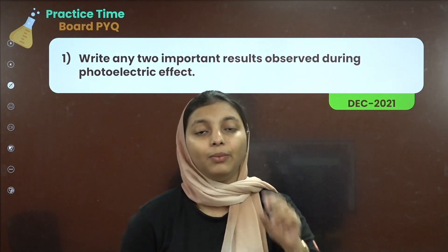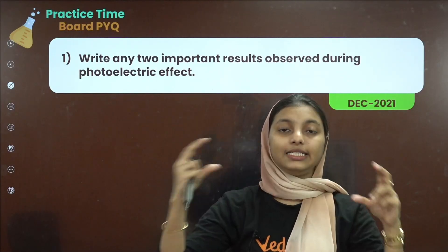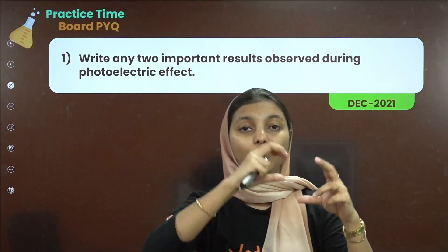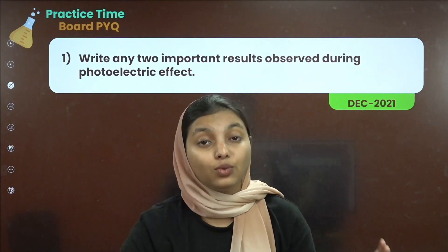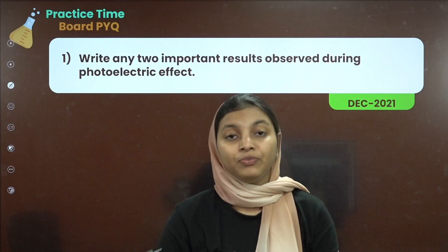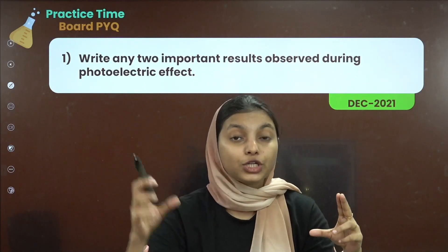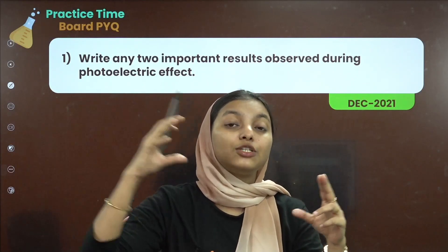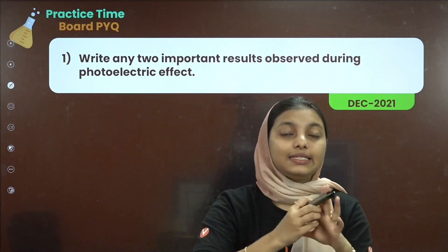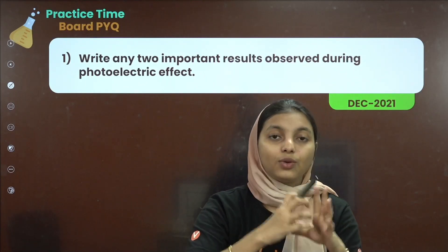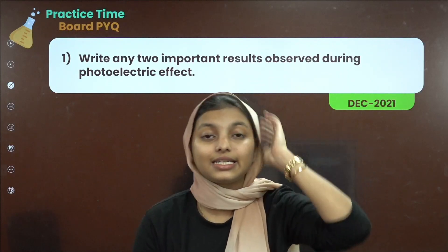First observation: the intensity of light is proportional to the number of electrons ejected. The number of ejected electrons will be proportional to the intensity of light hitting the metal.